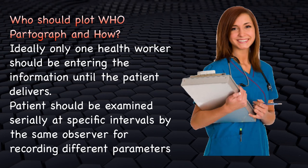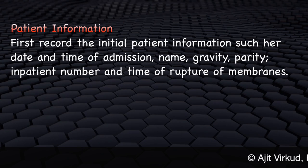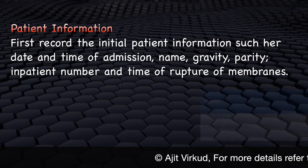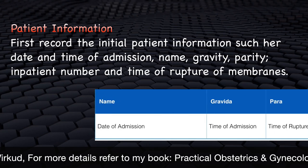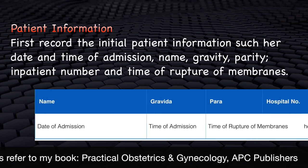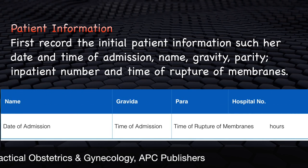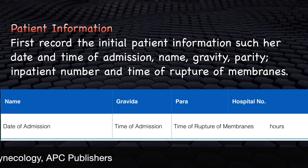Now, I am going to discuss how to plot each parameter on partograph. First, I will discuss how often to observe the parameter and then how to plot it on the partograph paper. First, record the initial patient information such as her date and time of admission, name, gravidity, parity, inpatient or hospital number and the time of rupture of membranes.